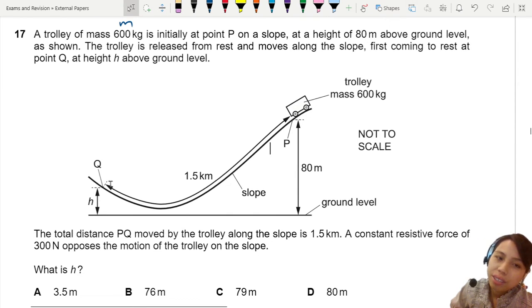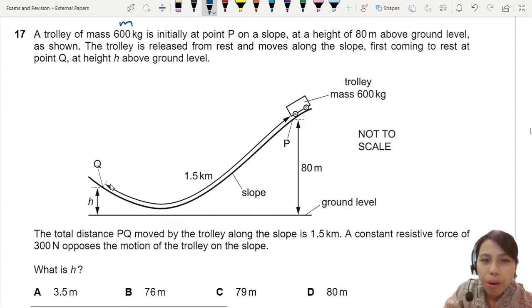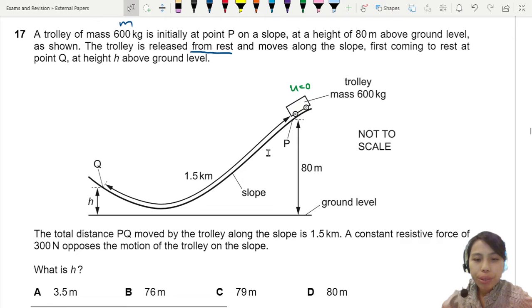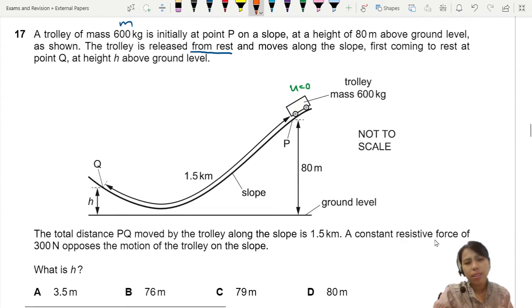Released from rest - that's a note I want to make. Initial speed is zero, which also means initial kinetic energy is zero. The total distance traveled is 1.5 km. A constant resistive force of 300 newtons opposes the motion of the trolley on the slope. So maybe the track is a bit rough, got some energy loss along the way.